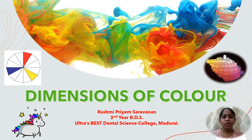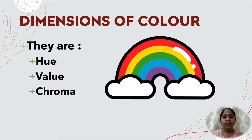Hello and welcome to today's topic: the dimensions of color. The dimensions of color are the hue, value, and chroma.